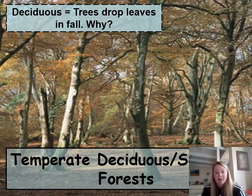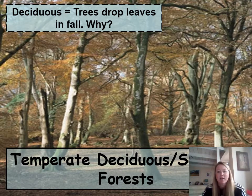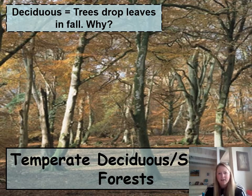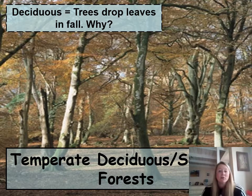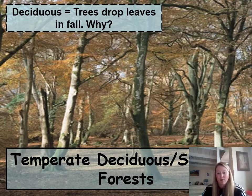This leads us to the temperate deciduous forest. Deciduous means to drop — so these plants tend to drop their leaves in the fall. It's an energy-saving device; they drop their leaves when sunlight becomes less available because sunlight is needed for photosynthesis and leaves are the main photosynthesizing tools. They drop them to conserve energy, then grow them back in spring. It's almost like they're hibernating or shutting down for the winter.